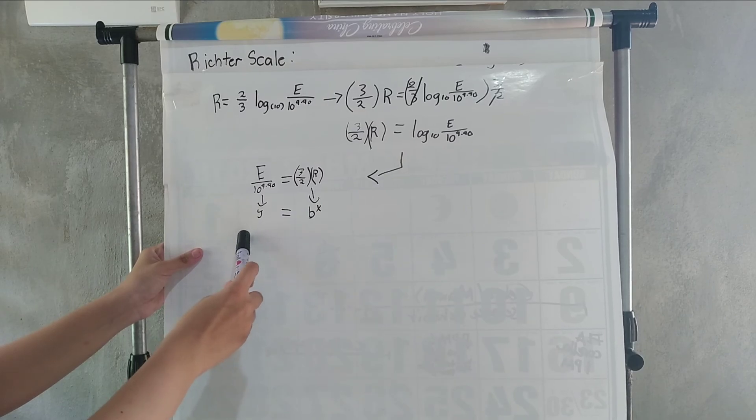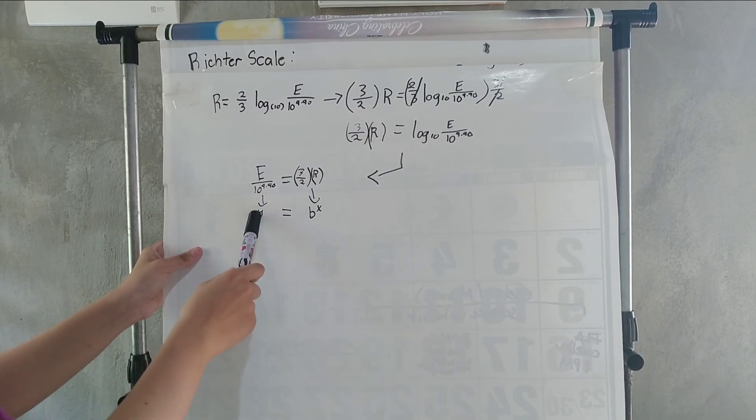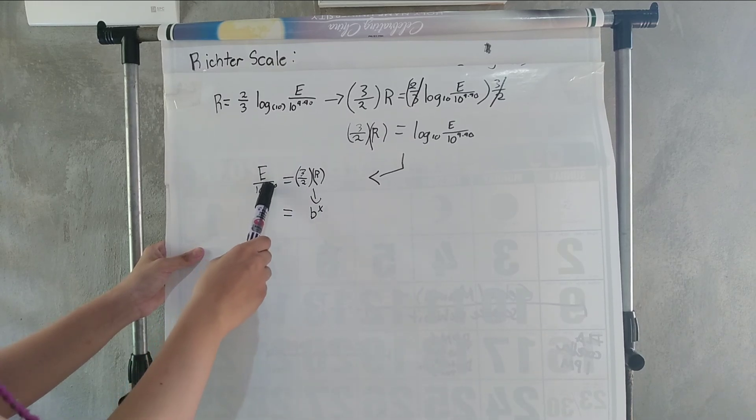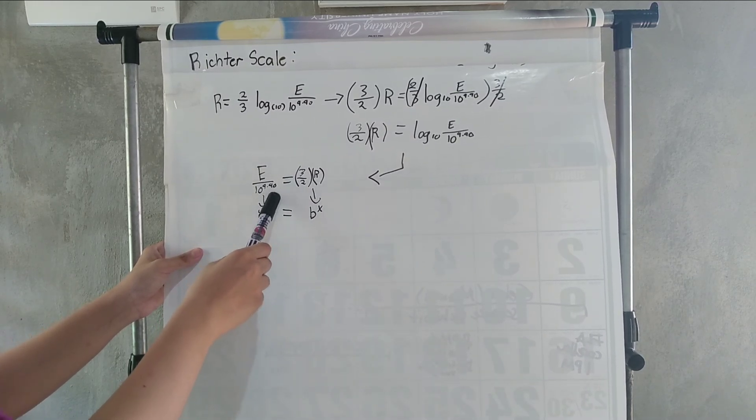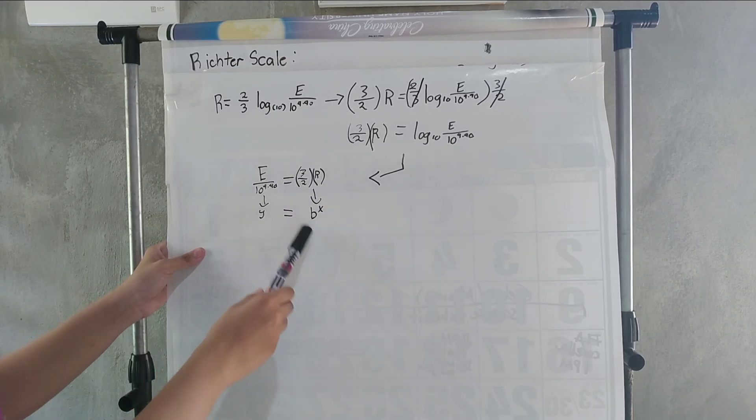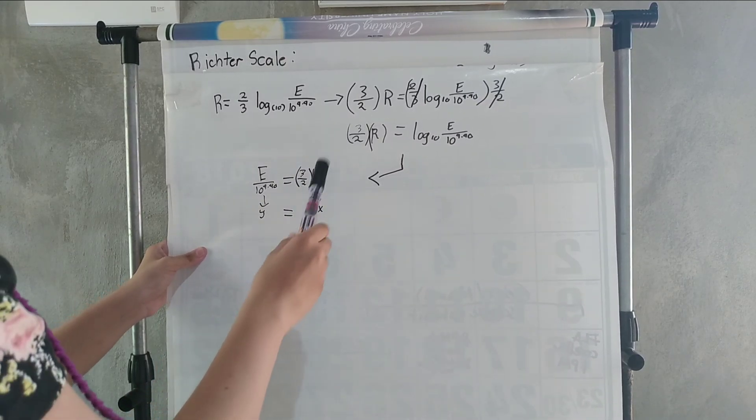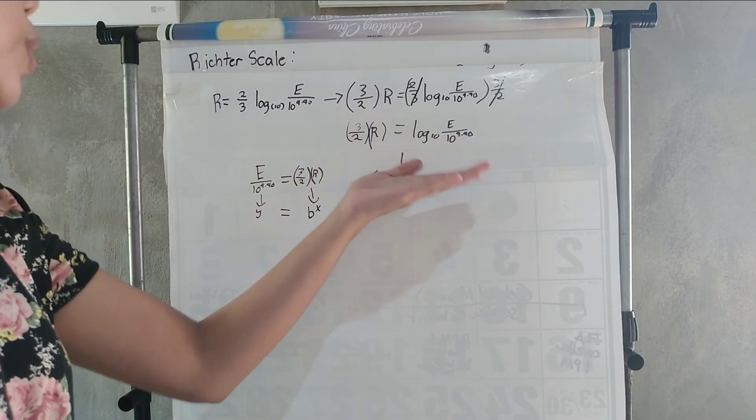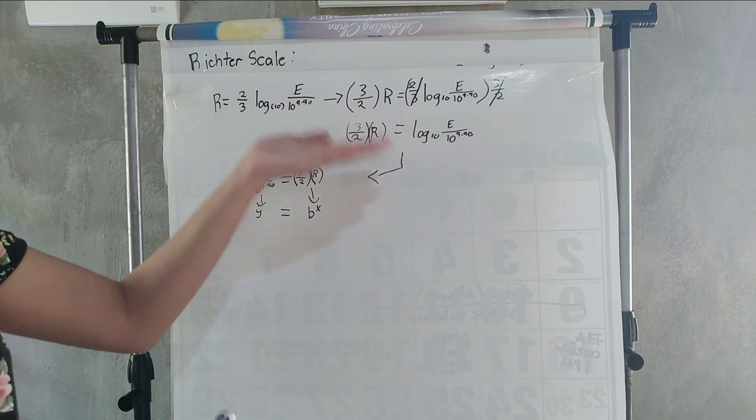Now from this logarithmic equation, we're going to transform it into an exponential equation. Y equals B to the power of X where E over 10 to the power of 4.40 is our Y and 3 over 2 times the magnitude given is our B to the power of X. And that's how you're going to compute for the energy released in joules when you are only given the magnitude.